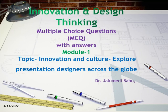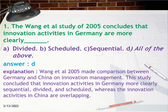Welcome to Innovation and Design Thinking MCQ with explanations for Module 1: Innovation and Culture. Question 1: The Wang and Eyal study of 2005 concludes that innovation activities in Germany are more clearly divided, scheduled, and sequential. Answer: D, all of the above. Explanation: Wang and Eyal (2005) compared Germany and China on innovation management, concluding that innovation activities in Germany are more clearly sequential, divided, and scheduled, whereas innovation activities in China are overlapping.